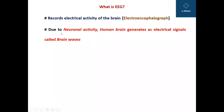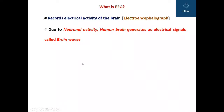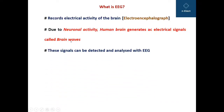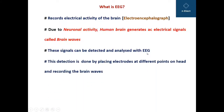There are different neurons and cells in the brain of a human being which are constantly developed and get destroyed, and due to their activity — that is, neuronal activity — the human brain generates AC electrical signals. These AC electrical signals are basically the brain waves, and they can be easily detected or analyzed with the help of an electroencephalogram, that is EEG.